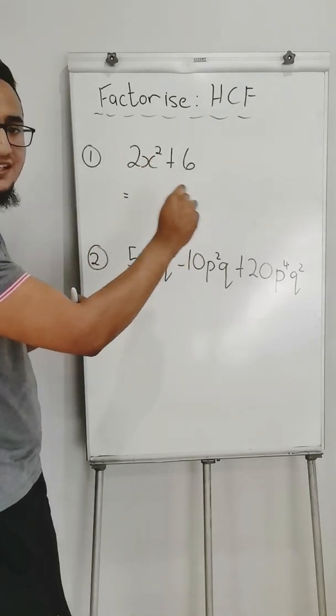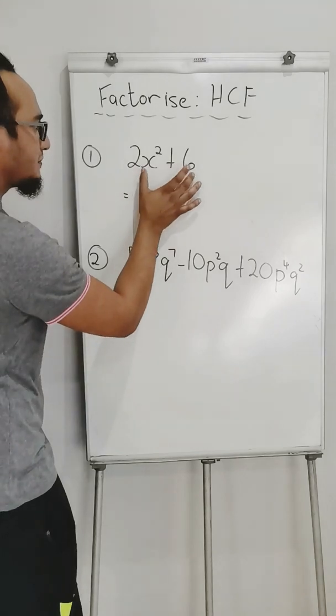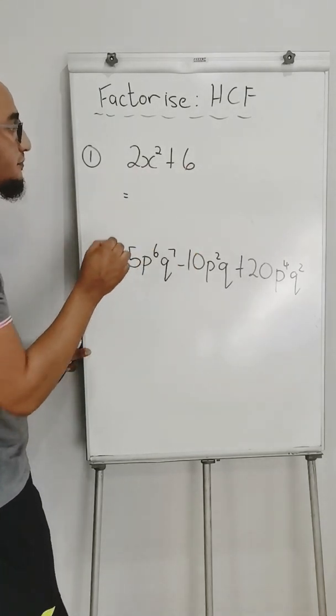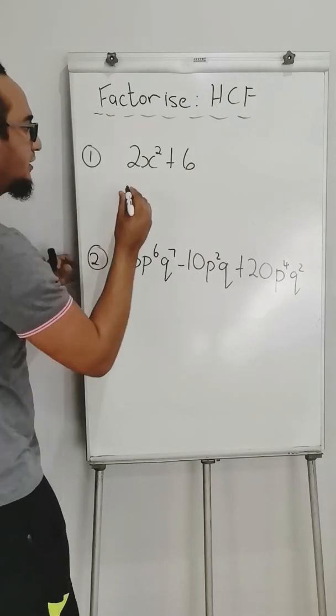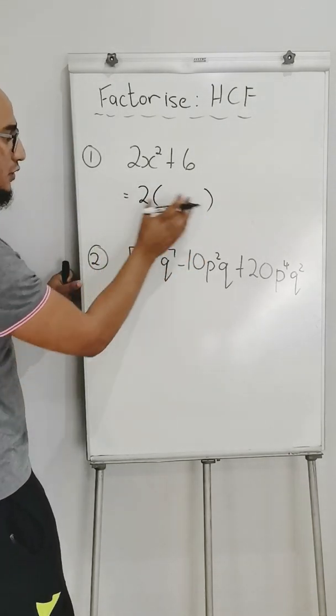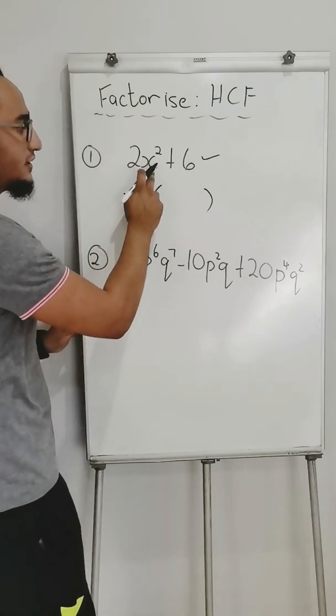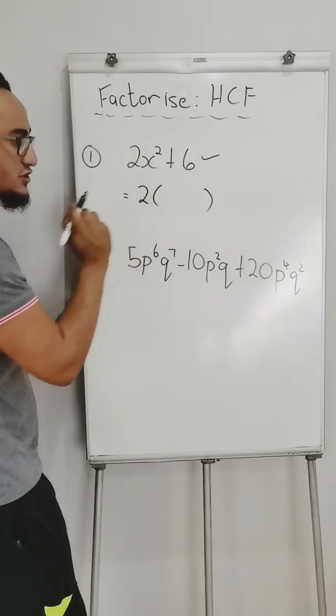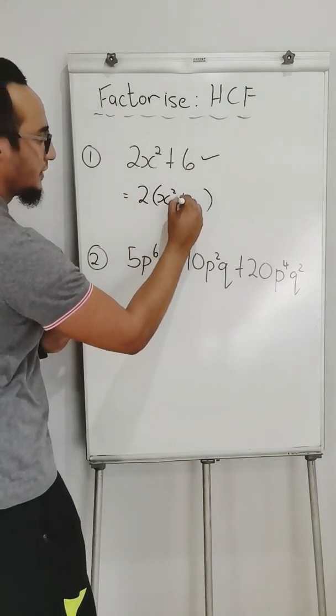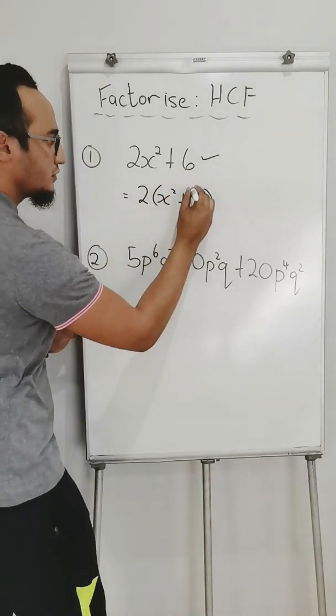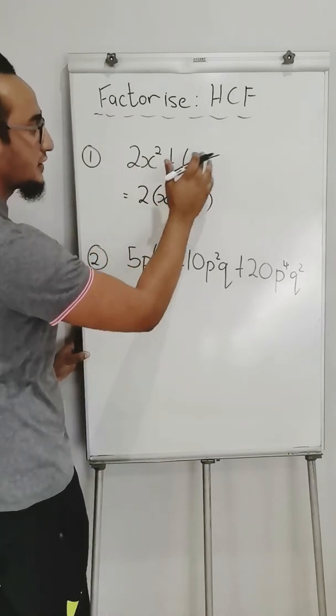So I have 2x² + 6. Now common means what appears in both of my terms. Does x appear in both of my terms? No. So it will not be a common factor. I just look at my numbers. What number is divisible by two and six and it is the highest of that common factor? Obviously the number would be two. A very easy method: take each term divided by my highest common factor and that goes in my bracket. So 2x² divided by 2, what is left? x² plus 6 divided by 2 is equal to 3. And that is my answer.